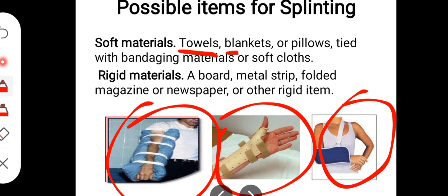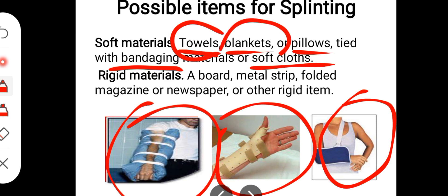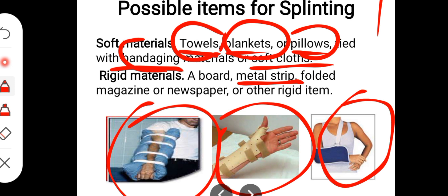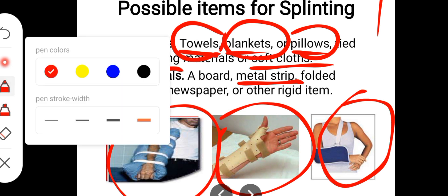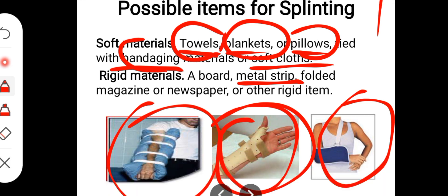Soft splinting materials include towels, blankets, pillows, bandages, and soft cloths. Rigid splinting materials include metal strips, magazines, newspapers, or other rigid items. Both soft and rigid materials can be used depending on what is available at the time of injury.